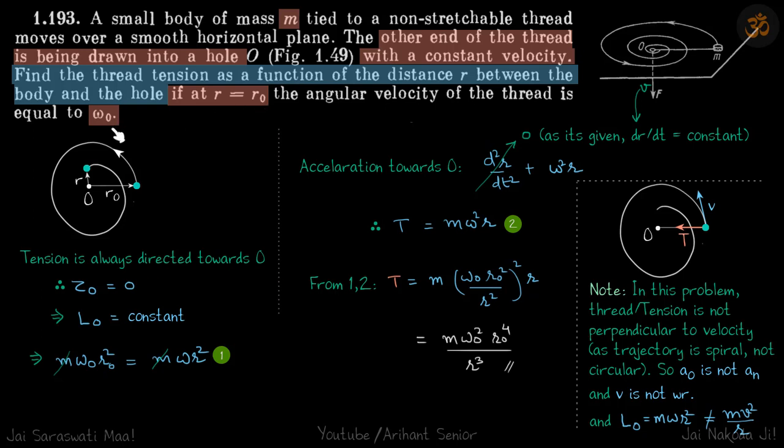The angular velocity initially is given as omega naught. So the thread is going like this in a spiral path and the thread is being pulled downwards with a constant velocity v.